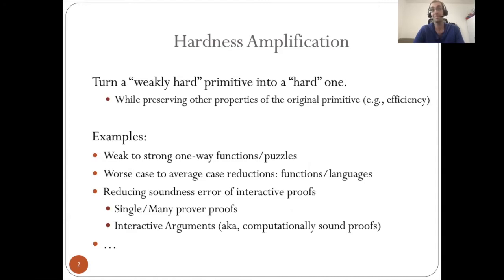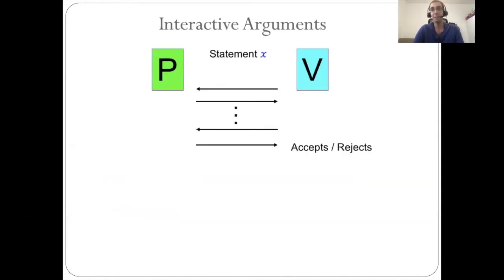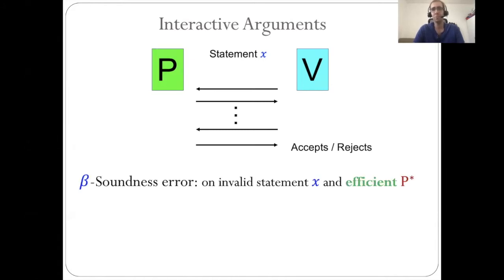These are proofs where the soundness guarantee only holds against computationally bounded provers. So let me briefly remind you what interactive arguments are. In an interactive argument, we have a prover P, a verifier V, and usually a statement X that the prover wants to prove. They start interacting with each other and at the end, the verifier either accepts or rejects.